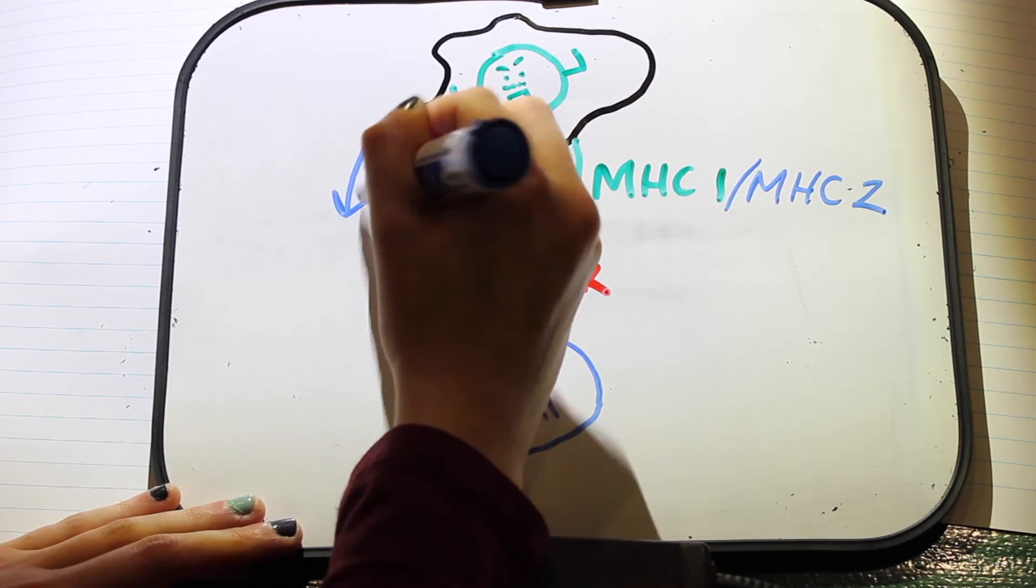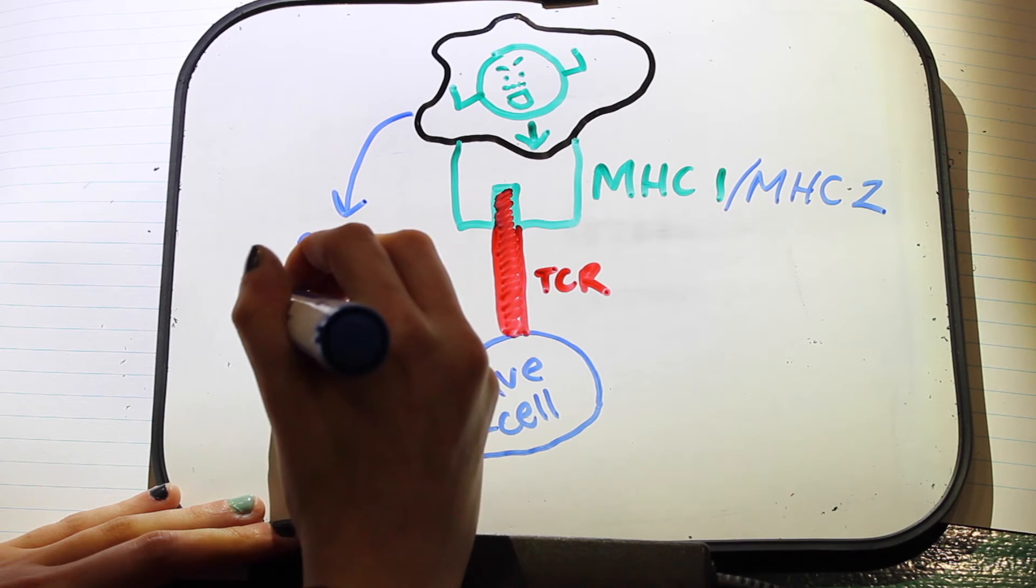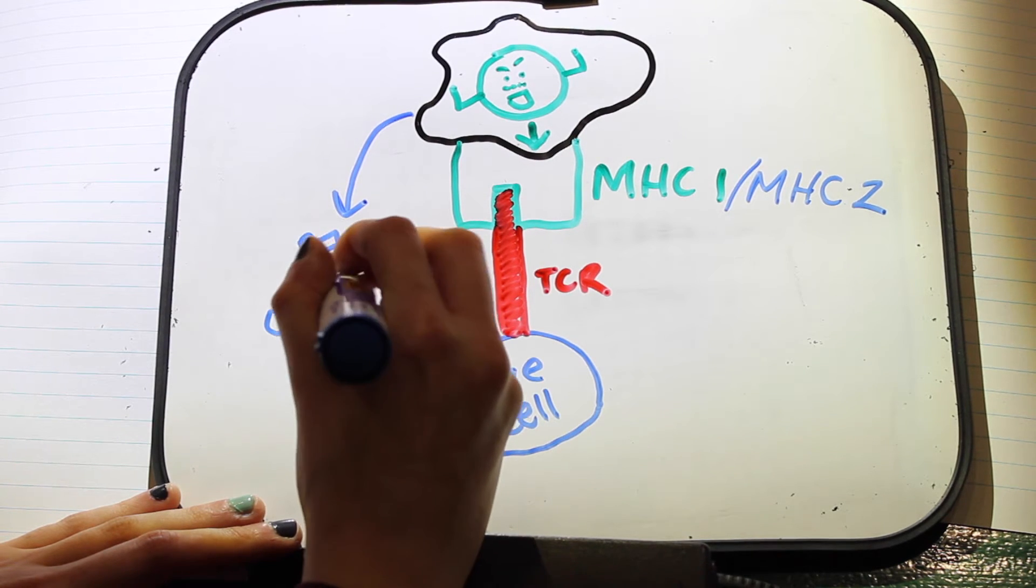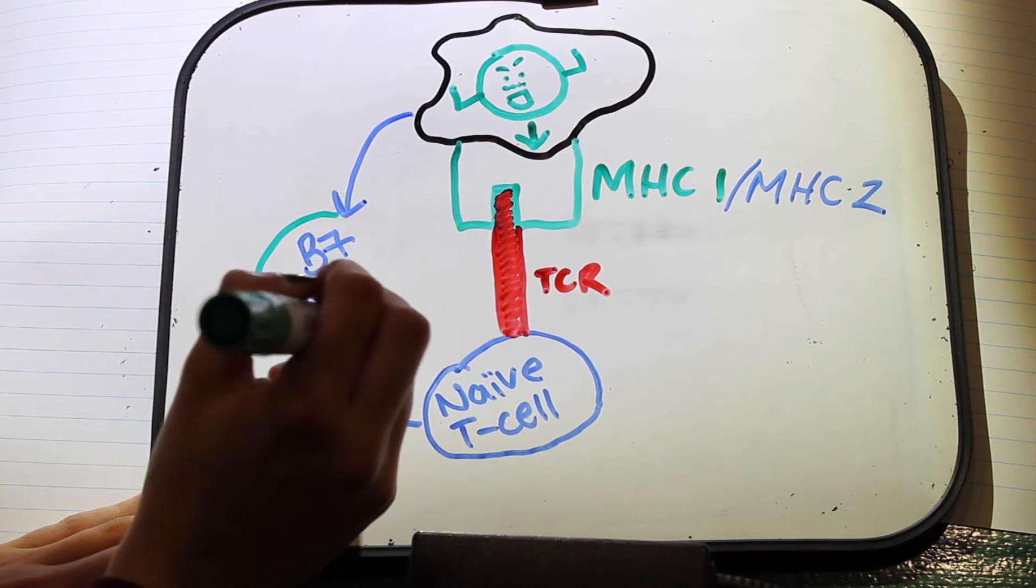TCR-peptide-MHC: T-cell receptor complexes interact with MHC along with the simultaneous binding by a specific co-receptor. These co-receptors are specific to MHC class 1 and MHC class 2.